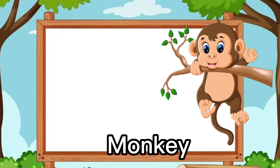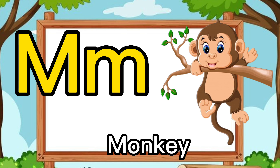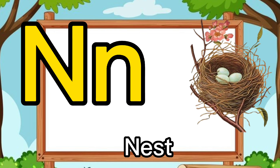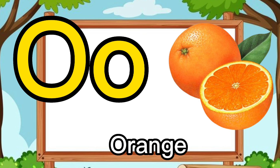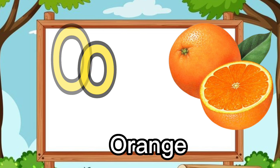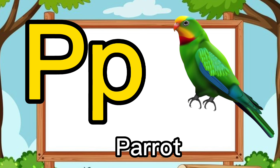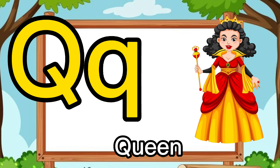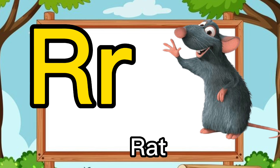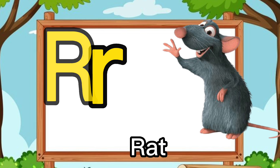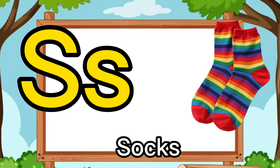M for monkey. N for nest. O for orange. P for parrot. Q for queen. R for red. S for soft.